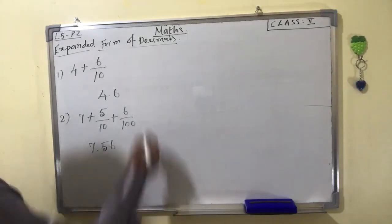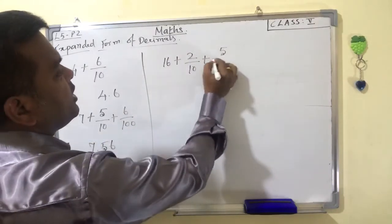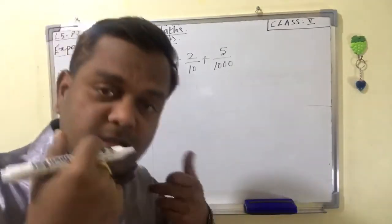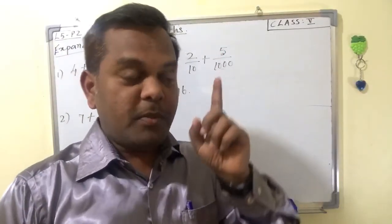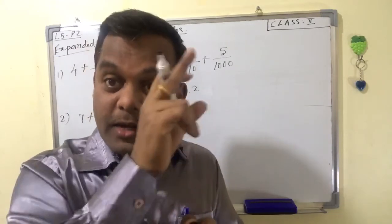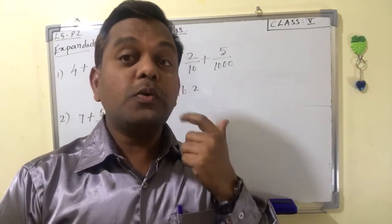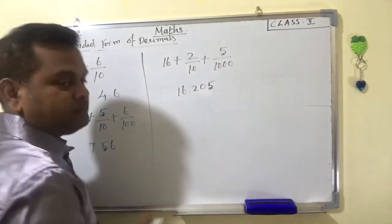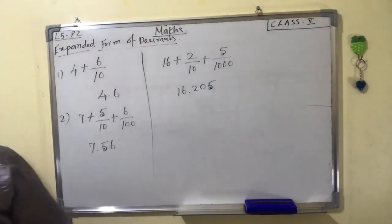Next: 16 plus 2/10 plus 5/1000. This is a little difficult. 16 is the whole number. 2/10 goes in the tenths place — first place after the decimal — so write 2. The next place should be hundredths, but there is no hundredths term here, so you must add a zero. Then 5/1000 gives 5. The answer is 16.205.